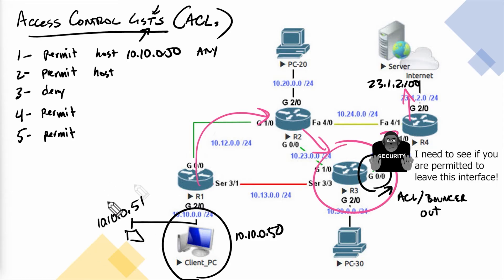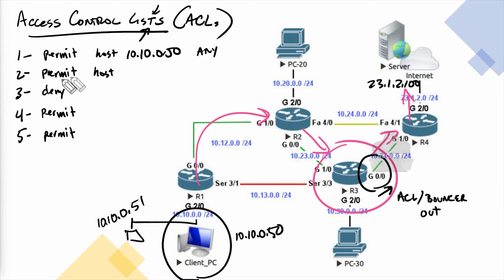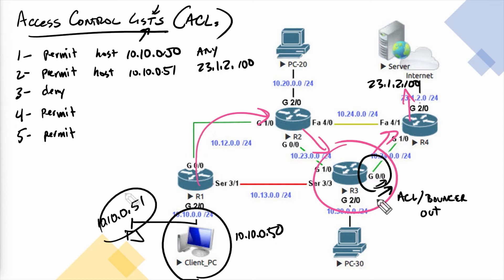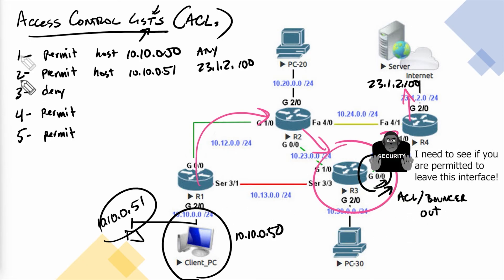Let's do another example. We have another computer at 10.10.0.51, and we want to permit its traffic going out this interface on R3. We make another entry in the ACL: permit traffic from host 10.10.0.51 going to 23.1.2.100. As traffic tries to leave Gig 0/0, the bouncer checks line one — no match — then line two: permit host 10.10.0.51 to that IP — that matches. The bouncer forwards it and stops processing the ACL for that packet.